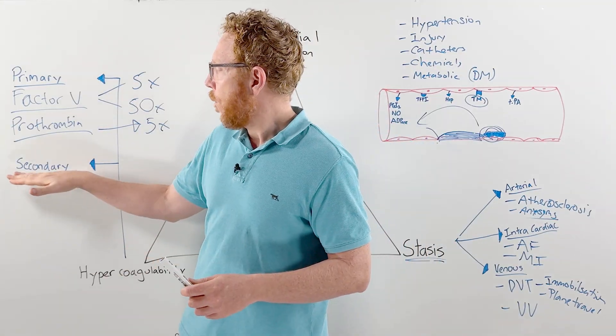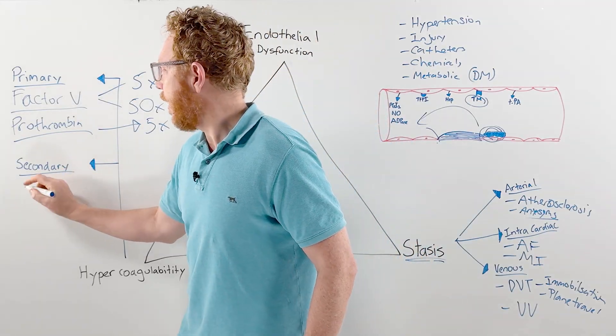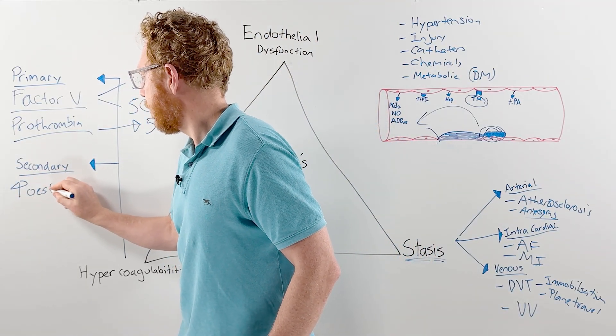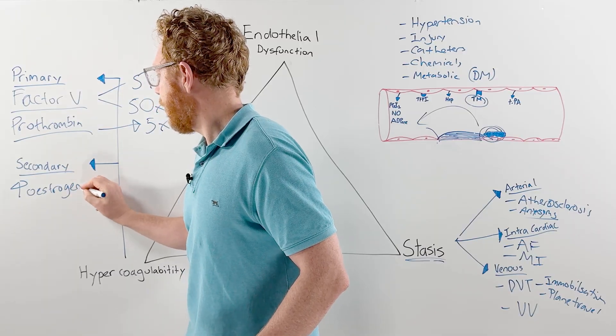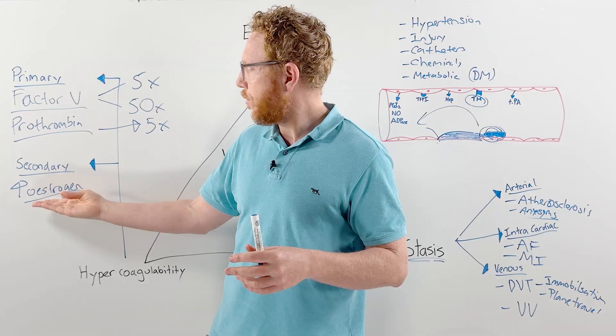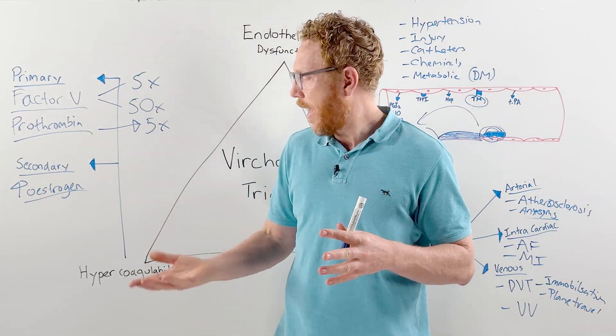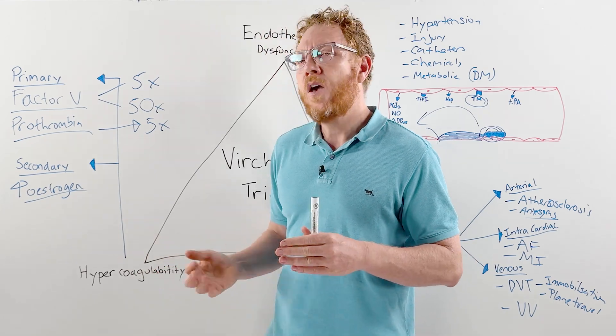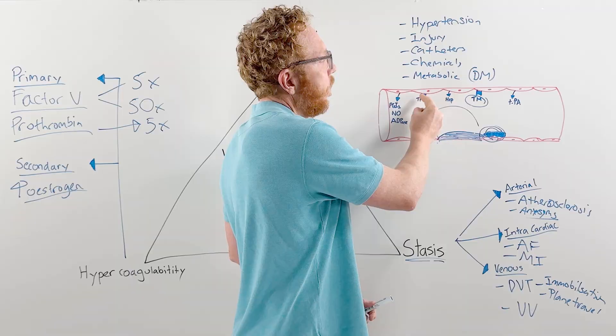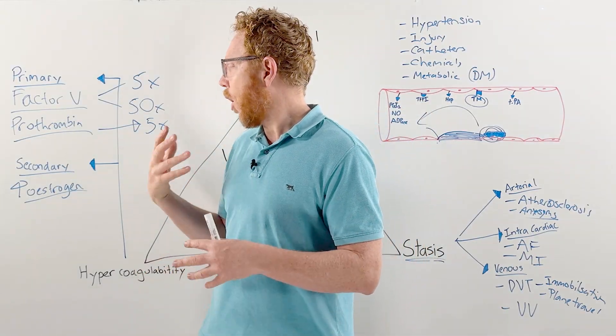When we look at secondary or acquired conditions for hypercoagulability, one is an increase in production of estrogen. Estrogen can come from pregnancy or the birth control pill. Estrogen goes to the liver and instructs it to produce more clotting proteins, increasing coagulability, whilst also decreasing antithrombin 3, which works with heparin. This also increases the procoagulation state.